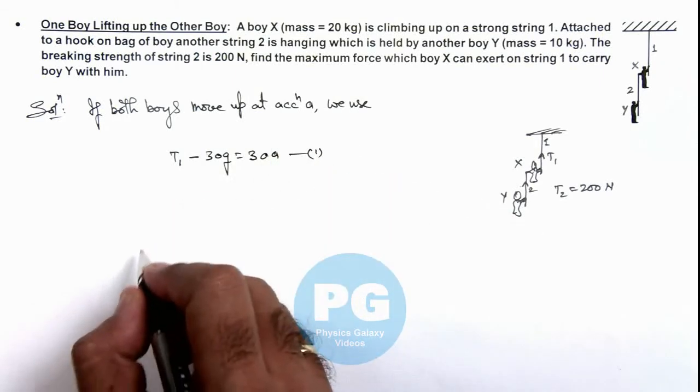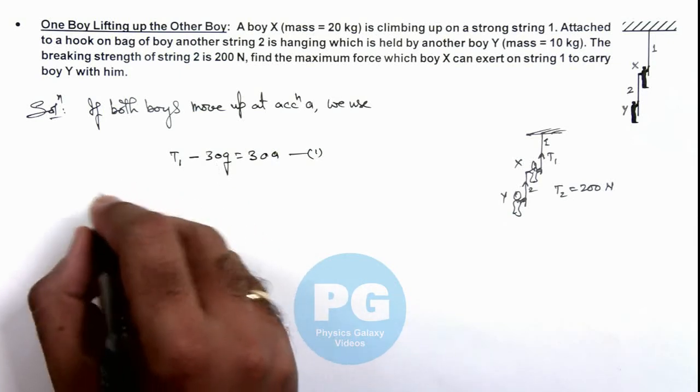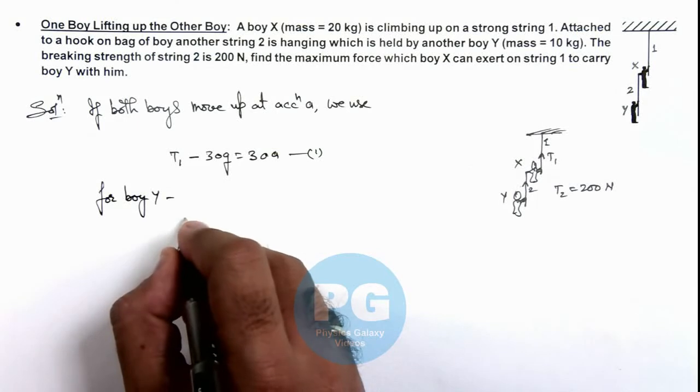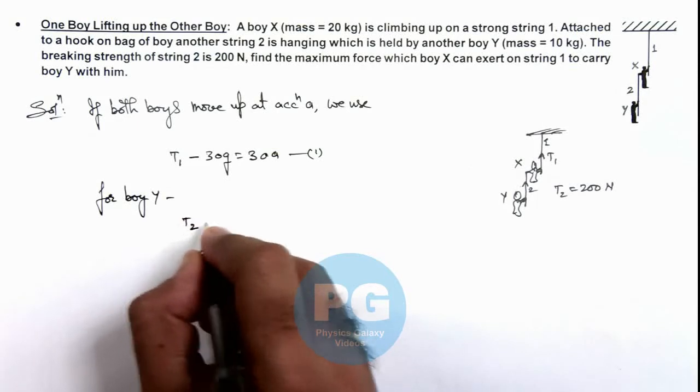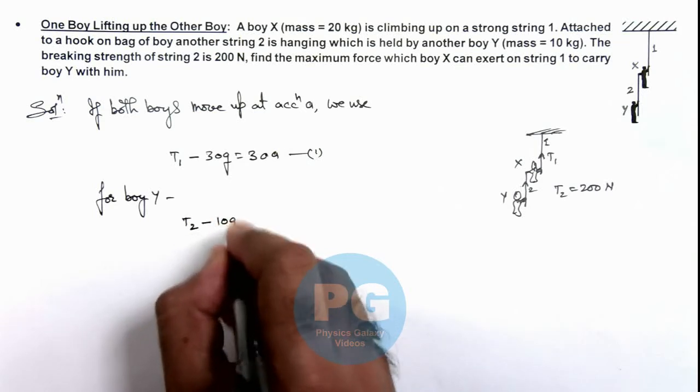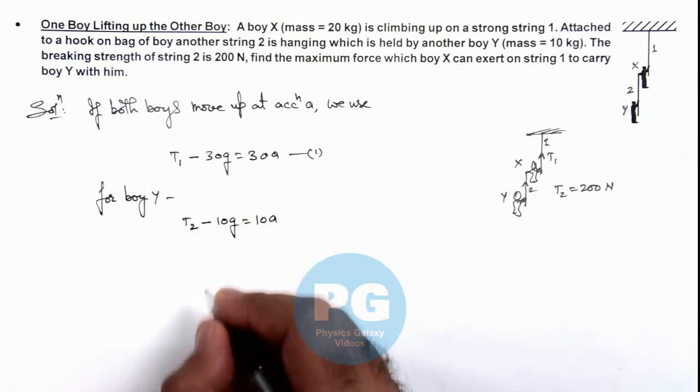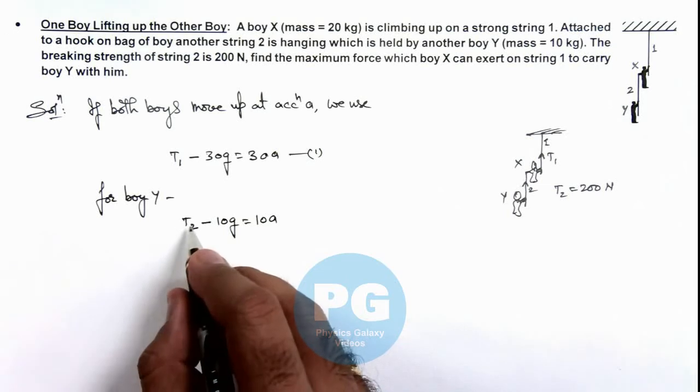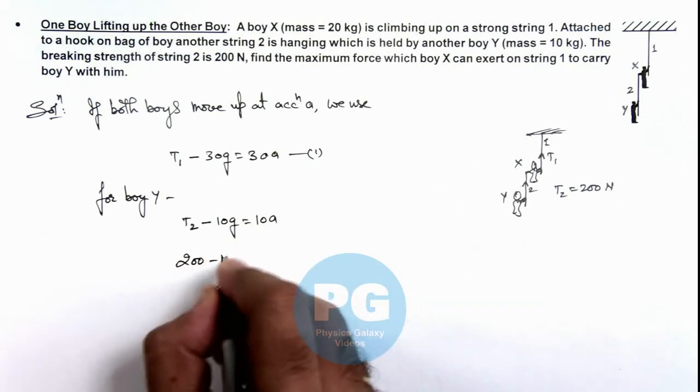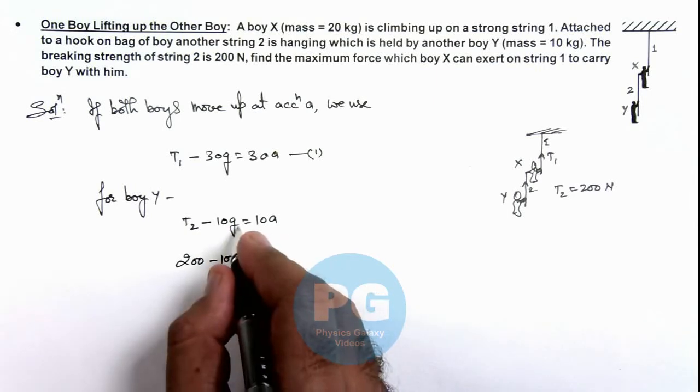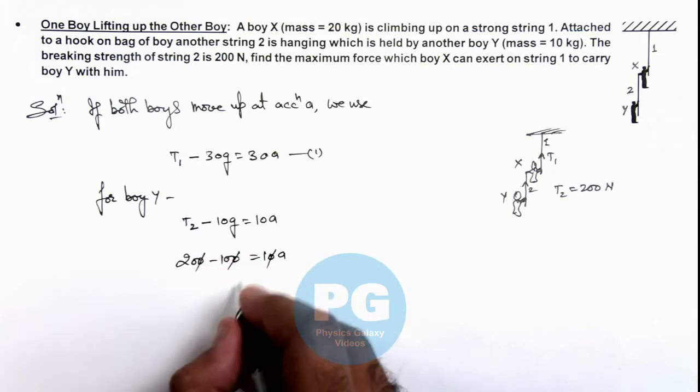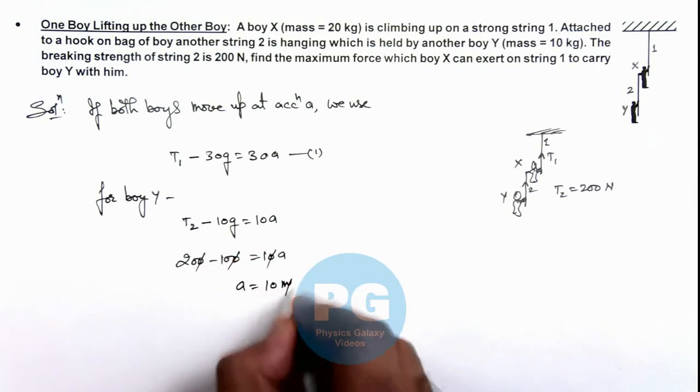In this situation here, if we write for Boy Y, here we can write tension T2 minus the weight of Boy Y is 10 kilograms, so this is minus 10g is equal to 10ay. And the value of T2 which can reach a maximum value of 200 newtons, this will be 200 minus 100. I am taking g as 10 meters per second squared. This is equal to 10ay. On further simplifying here you can see the value of ay we are getting is 10 meters per second squared.